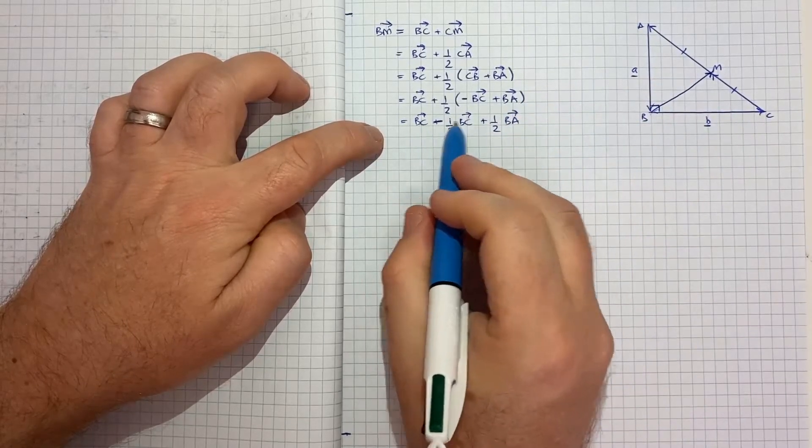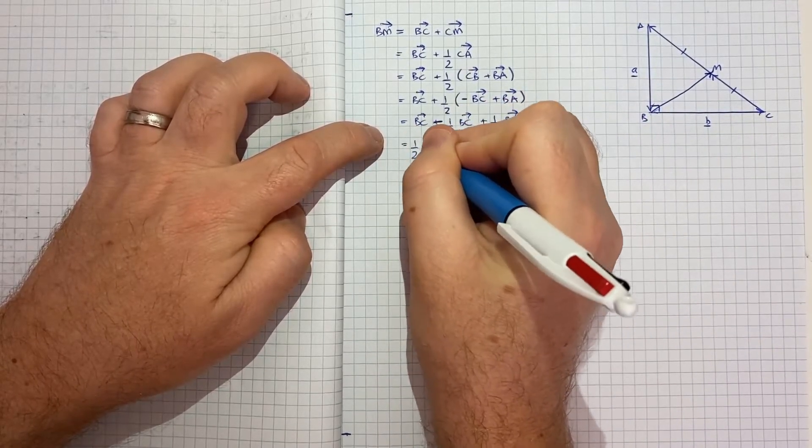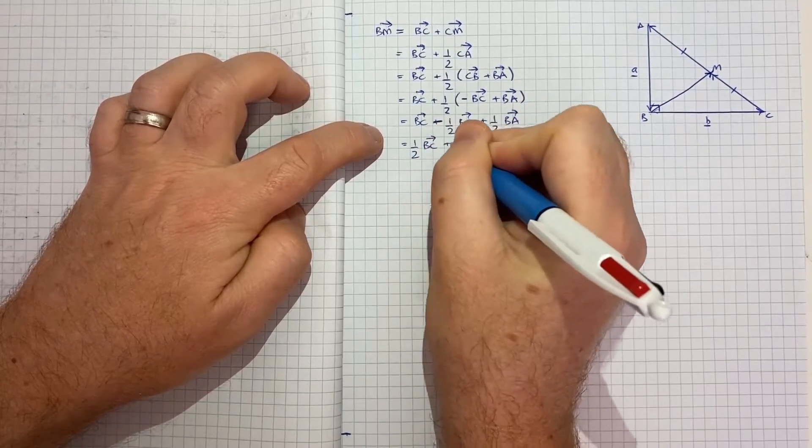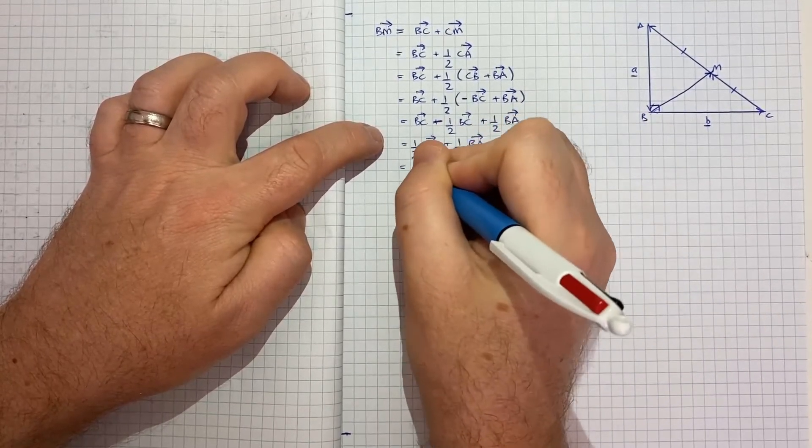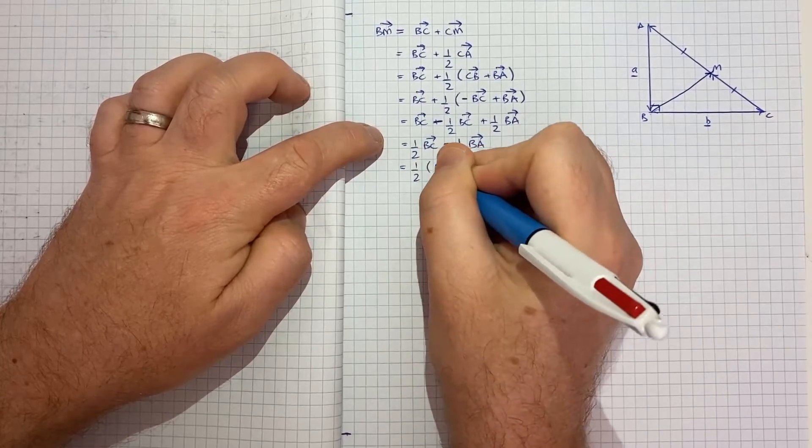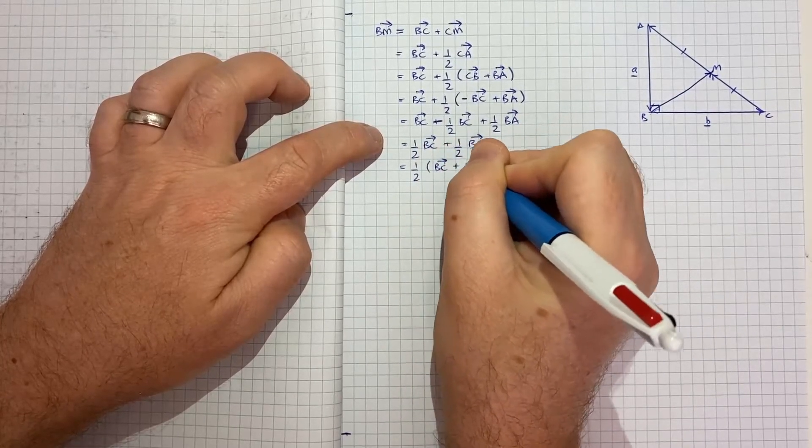Now I can expand this. So we'll get b c plus, or minus a half b c, plus a half b a. And this b c and this b c combine to give us a half b c, plus a half b a. And we can factor the half: b c plus b a.